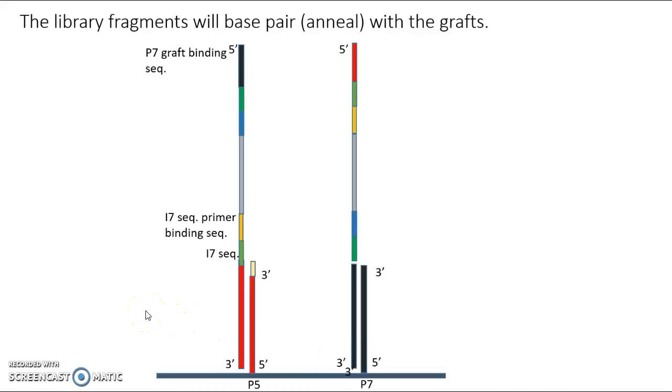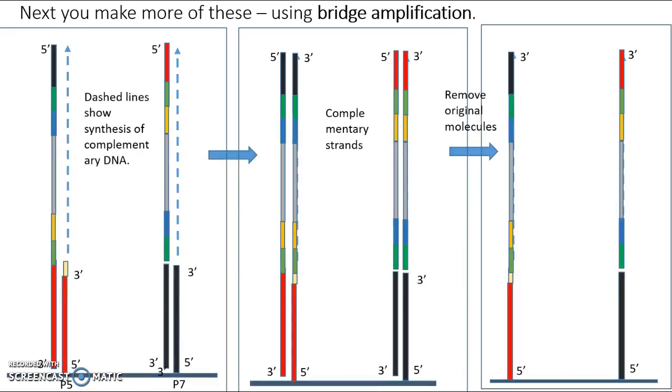Now essentially what we're going to do is we're going to make what's called a clonal cluster, which means we're going to go from one of each of these molecules attached to the surface to many. And we're going to do that by running about 35 cycles of synthesis reactions. And those synthesis reactions are called bridge amplification, and they're kind of a modified version of PCR. So here we go.